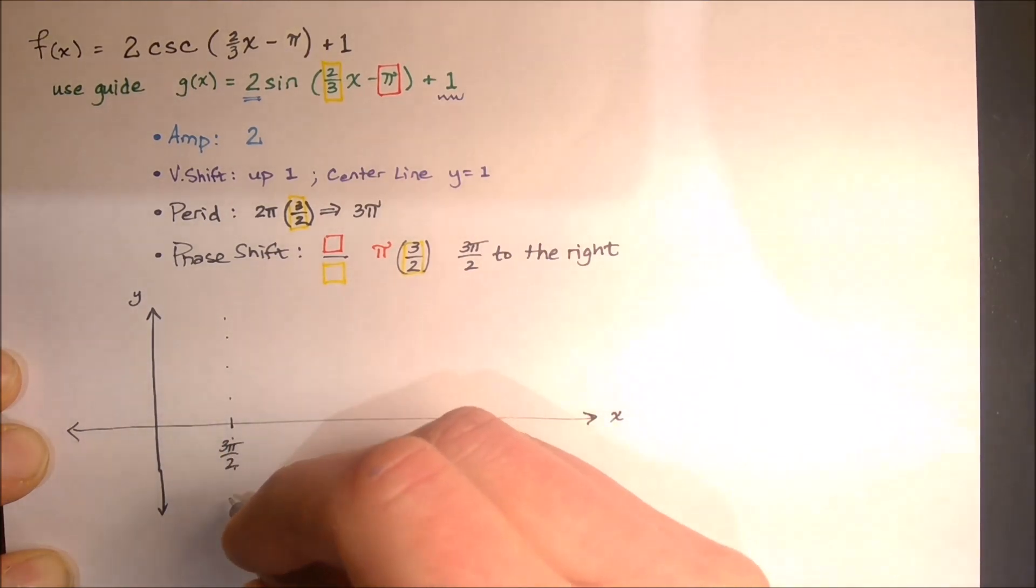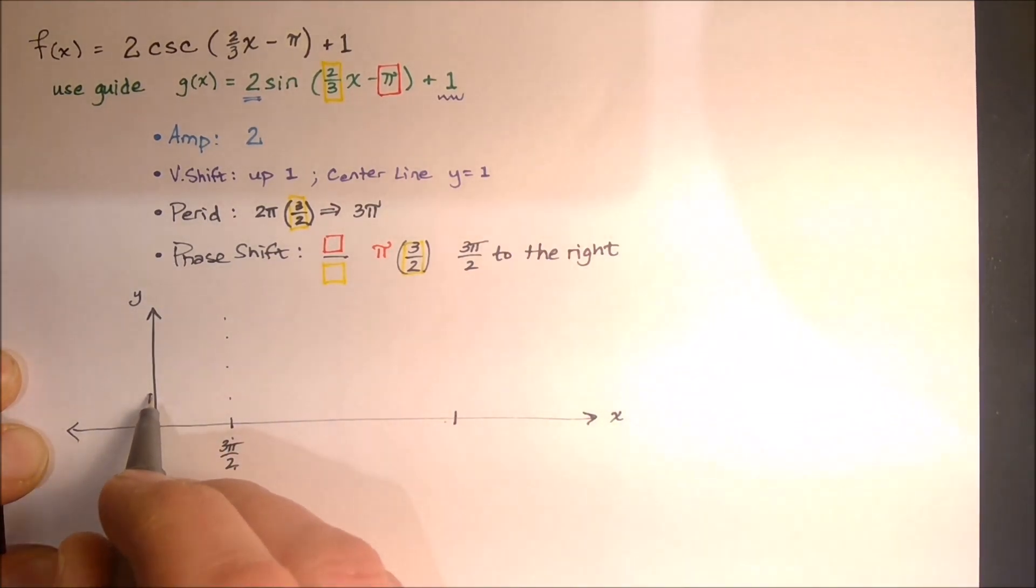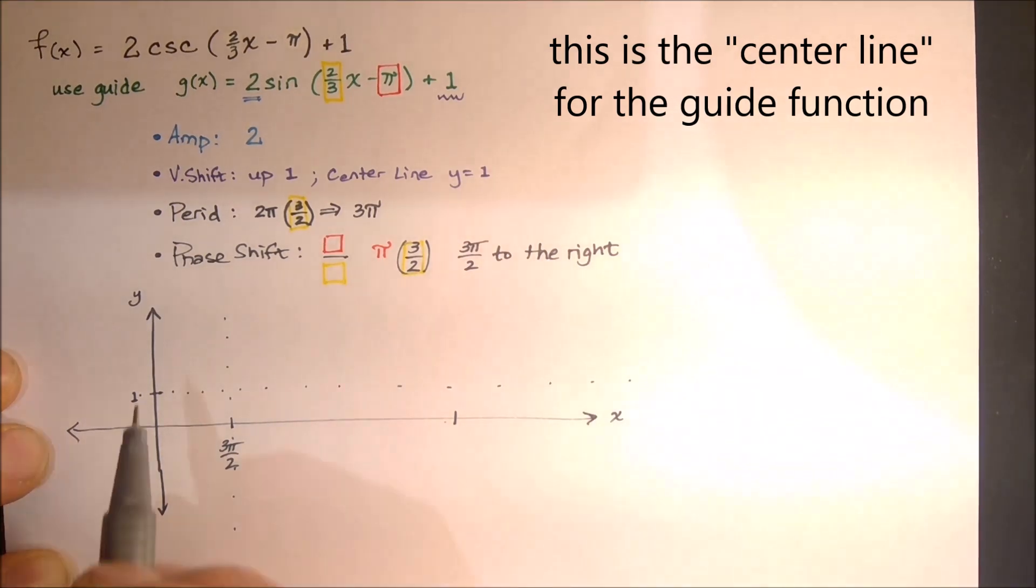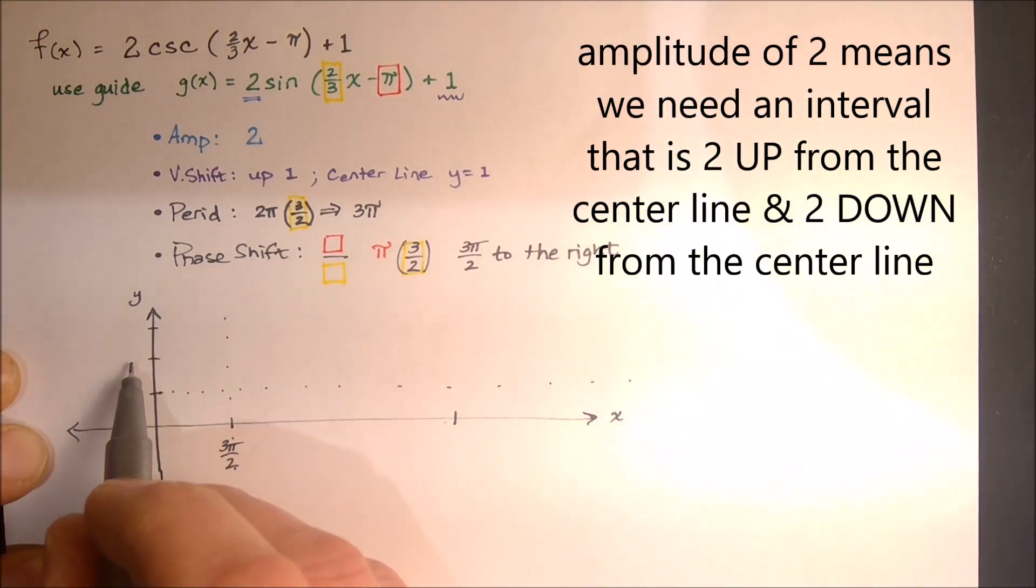Here's my guides, and at 1, that's my vertical transformation. And my amplitude was 2, so 2 to 3, down to 0, and down to negative 1. So there we go.